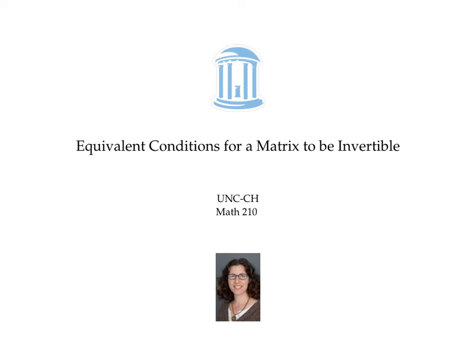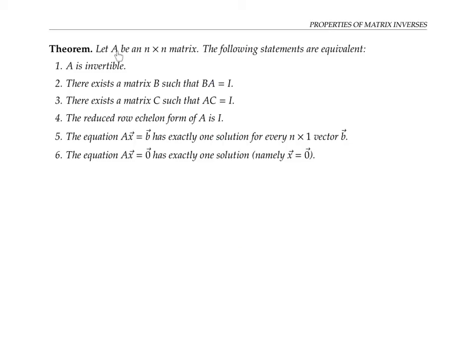This video gives a bunch of different ways of saying that a matrix is invertible. Let A be an n by n matrix. We say that A is invertible — by definition, that means there exists an n by n matrix, call it X, such that A times X is the identity matrix, and X times A is the identity matrix. That's the definition of A being invertible.